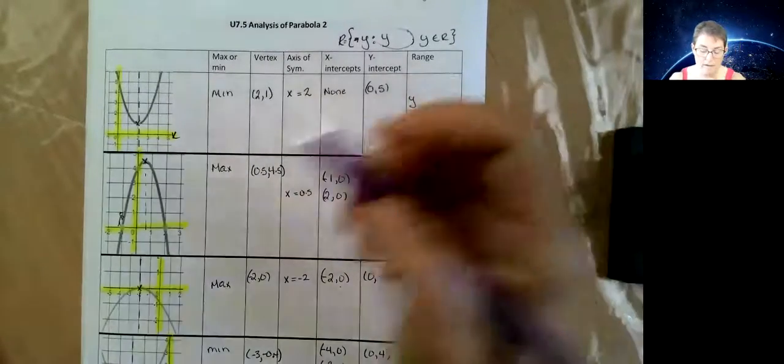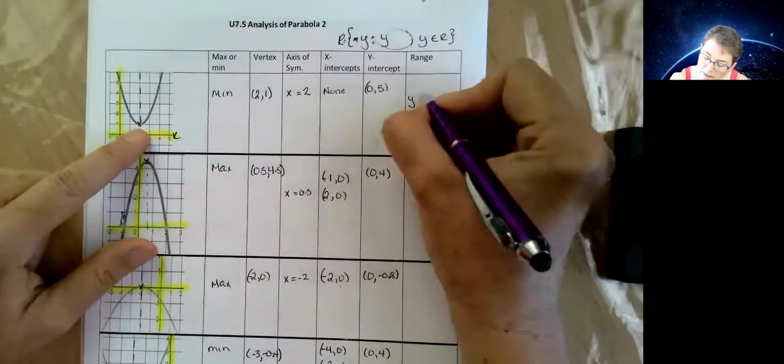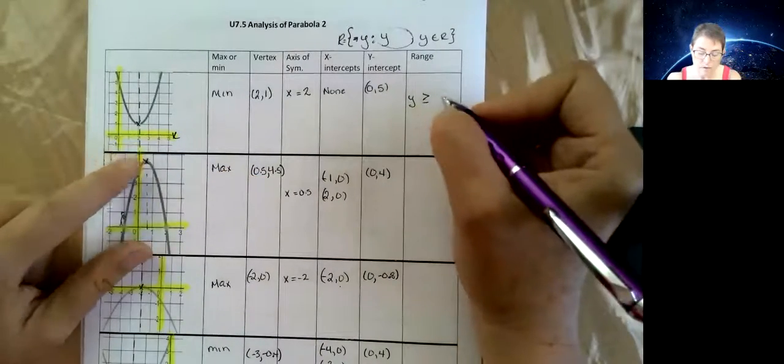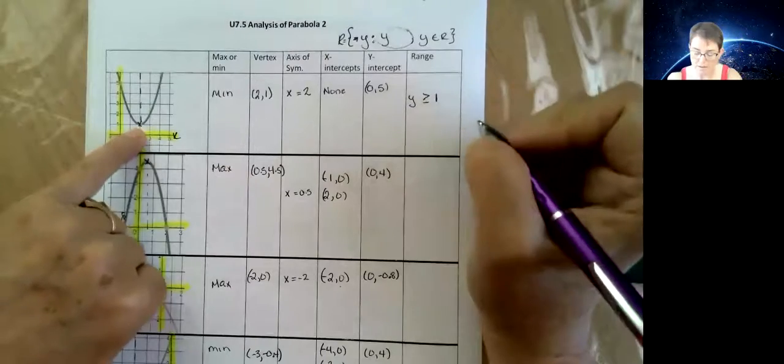So we've got y. Now this is opening up, so that's a great thing. It's greater than or equal to. And our lowest point, our minimum is at 1. And there we go.